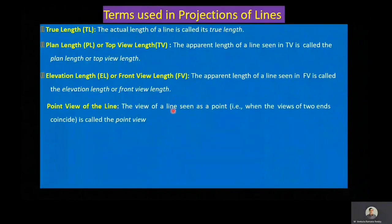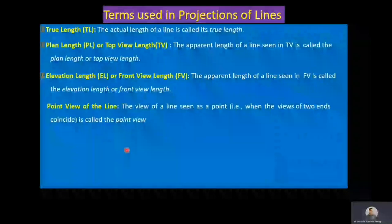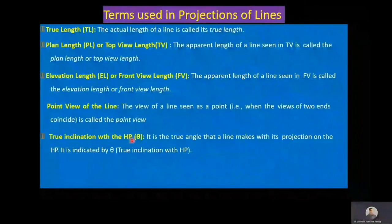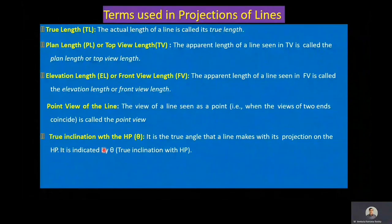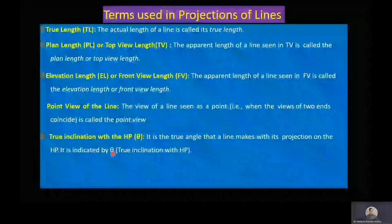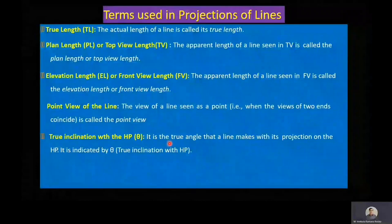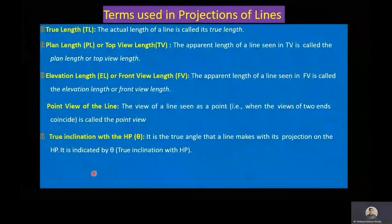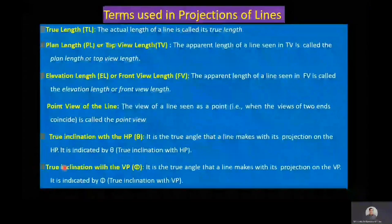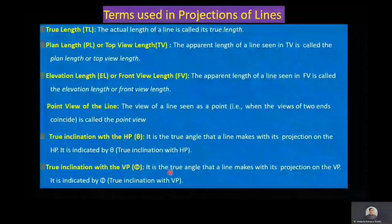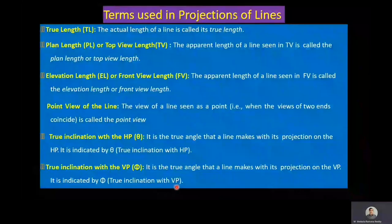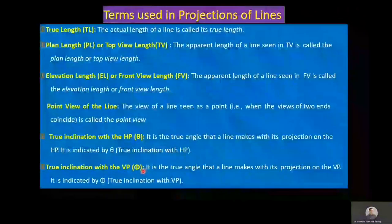Point view of the line: the view of a line seen as a point, i.e., when the views of two ends coincide, is called the point view. True inclination with HP is denoted by theta — it is the true angle that the line makes with its projection on the HP. True inclination with VP is denoted by phi — it is the true angle that the line makes with its projection on the VP. Theta and phi are the true inclinations.